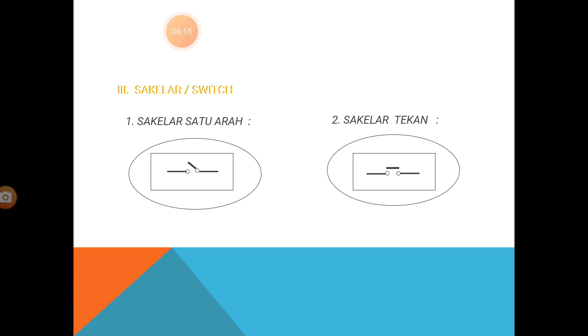Yang selanjutnya, saklar atau switch. Ini saklar satu arah, seperti klakson, satu arah. Saklar dua arah — ini juga bisa tombol seperti ini, klakson juga saklar tekan, ditekan. Selanjutnya, saklar tarik. Ini bisa di switch rem, atau banyak diaplikasi di sepeda motor, di kendaraan.